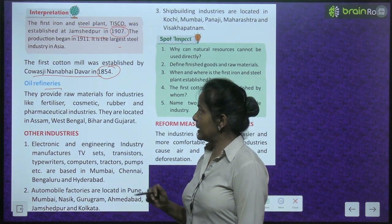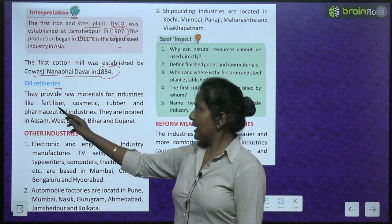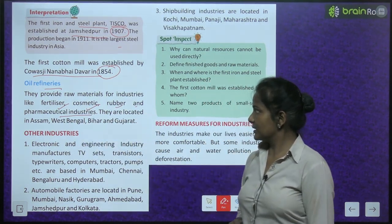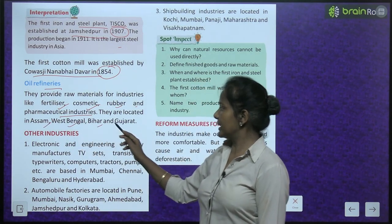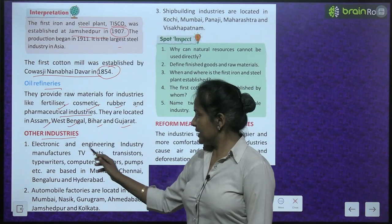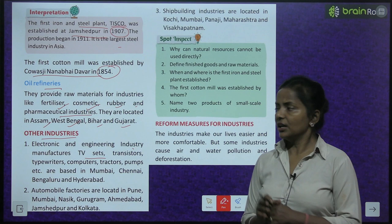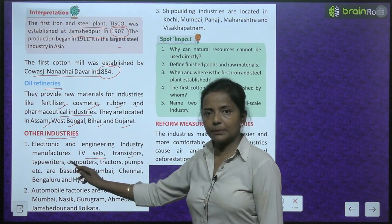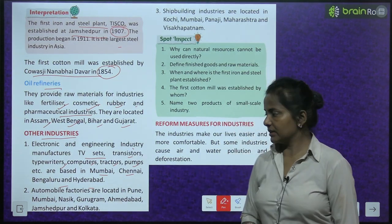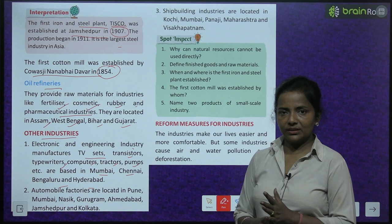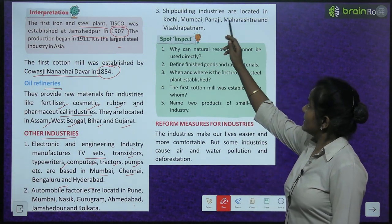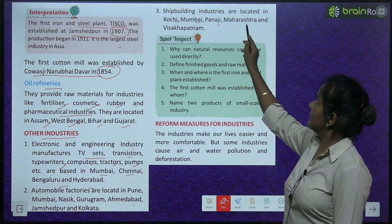Oil refineries provide raw materials for fertilizer, cosmetic, rubber and pharmaceutical industries. They are located in Assam, West Bengal, Bihar and Gujarat. Electronic and engineering industries manufacture TV sets, transistors, typewriters, computers, tractors and pumps — based in Mumbai, Chennai, Bengaluru and Hyderabad. Automobile factories are in Pune, Mumbai, Nasik, Gurugram, Ahmedabad, Jamshedpur and Kolkata. Shipbuilding industries are in Kochi, Mumbai, Panaji, Maharashtra and Visakhapatnam.